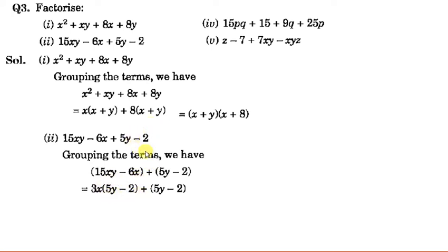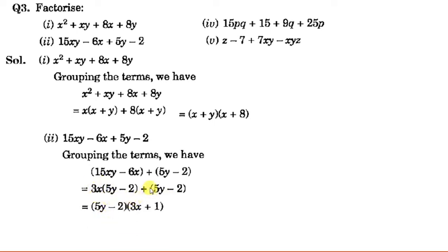From the last 2 terms, nothing can be taken common, so we keep them together in a bracket as (5y − 2). Now both terms have (5y − 2) common. Taking (5y − 2) common: from the first term 3x remains, and from the last bracket only 1 remains. So the factorization is (5y − 2)(3x + 1).